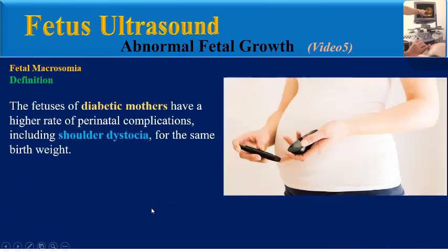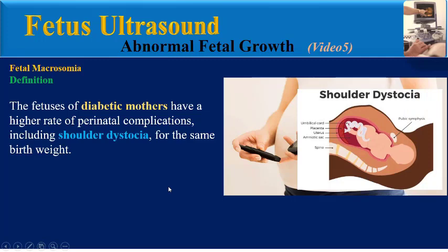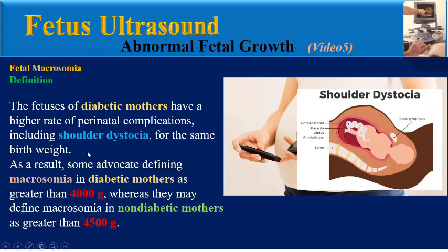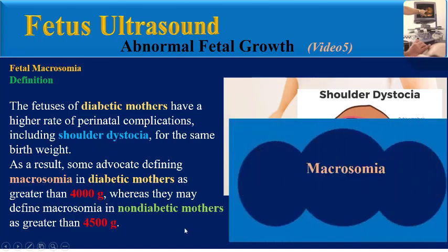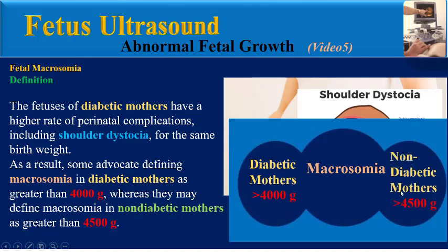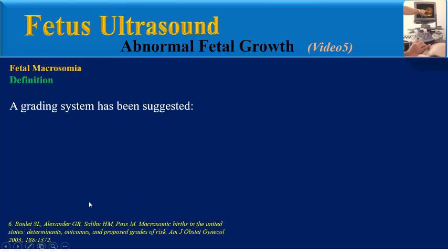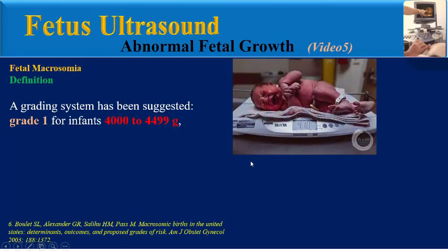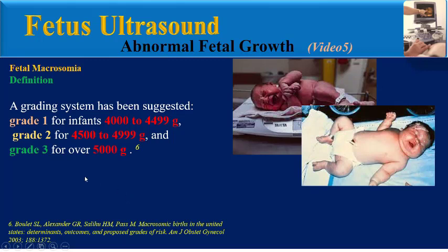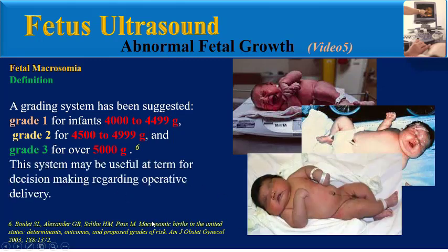The fetuses of diabetic mothers have a higher rate of prenatal complications, including shoulder dystocia, for the same birth weight. As a result, some advocate defining macrosomia in diabetic mothers as greater than 4,000 grams, whereas in non-diabetic mothers it is defined as greater than 4,500 grams. A grading system has been suggested: grade 1 for infants between 4,000 to 4,500 grams, grade 2 between 4,500 and 5,000 grams, and grade 3 for over 5,000 grams. This system may be useful for decision-making regarding operative delivery.